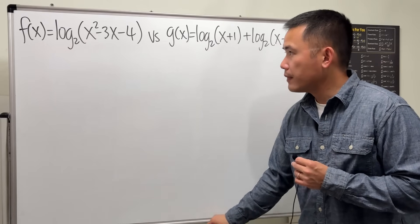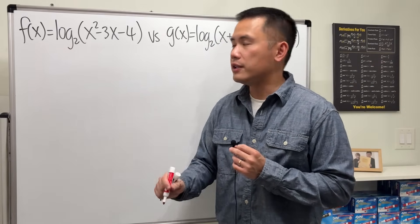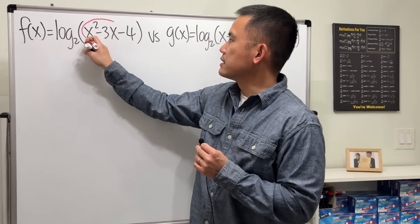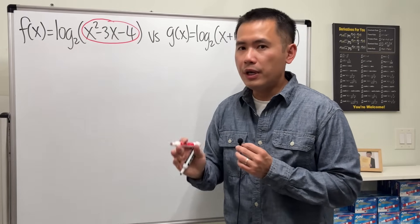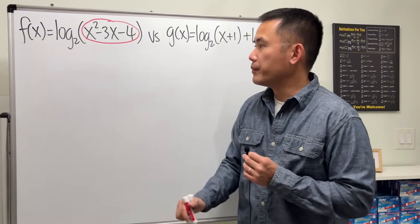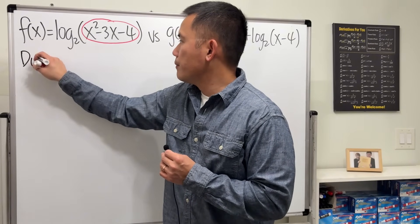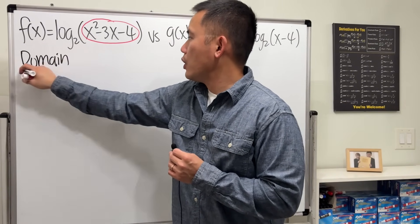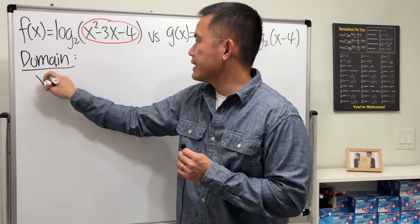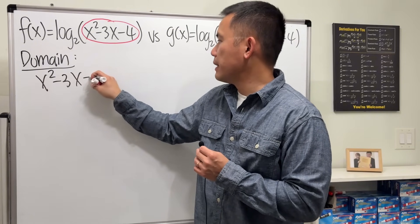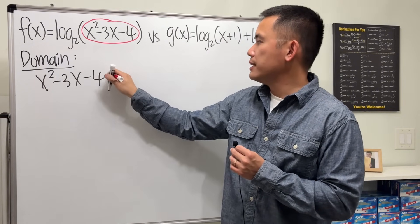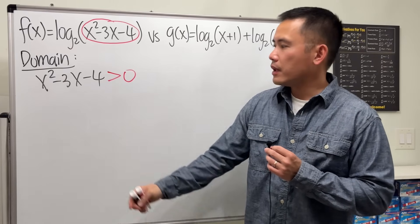So for the first one, to find the domain for log functions you always just look at the inside of the log and then you have to make sure it's greater than zero. So for the domain, we will have to have x squared minus 3x minus 4, this whole thing is greater than zero.